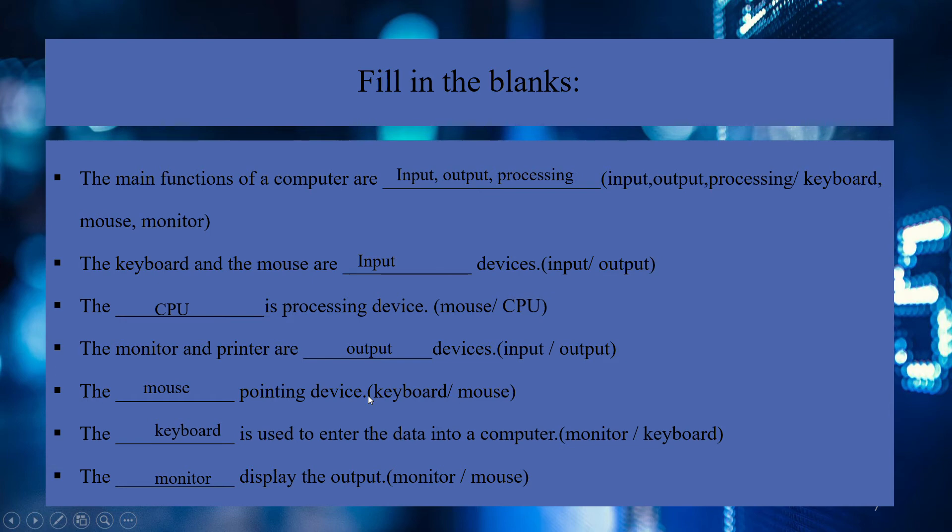The main functions are input, processing, and output. Keyboard and mouse are input devices. CPU is the processing device. Monitor and printer are output devices. The mouse is a pointing device. The keyboard is used to enter data into a computer — for example, your name using alphabetic keys. The monitor displays the output.